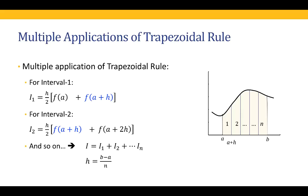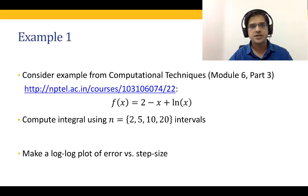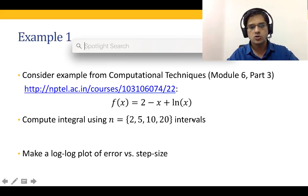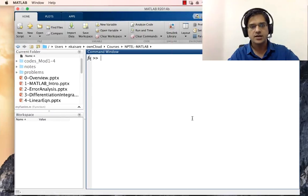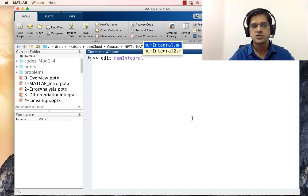We will now go to MATLAB and solve this using multiple applications of the trapezoidal rule. This is the first of two methods I will show you today. Let's consider the example from the previous lecture: finding the integral of 2 minus x plus ln(x).